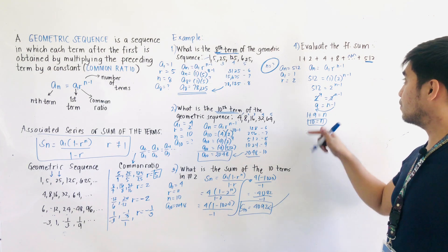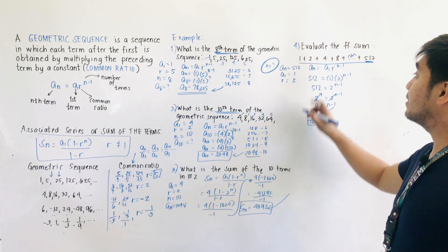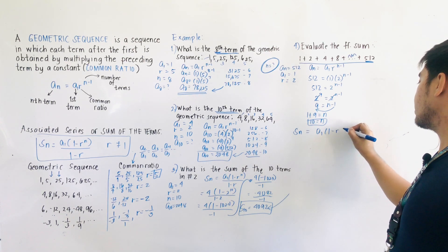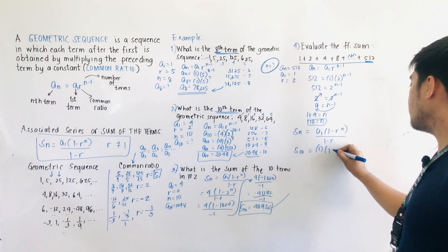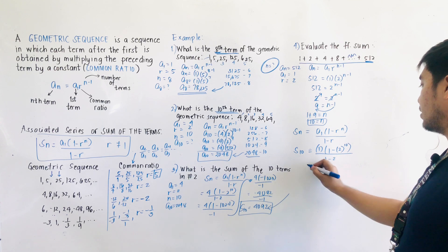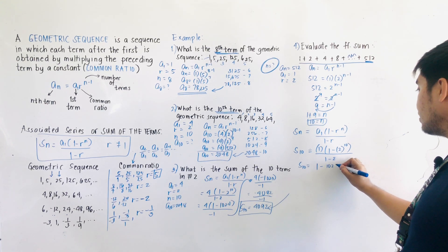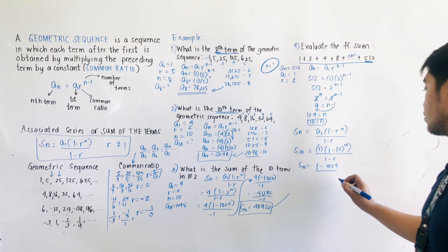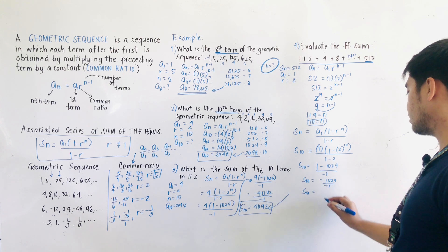Now we get the sum. Using SN equals A1 times 1 minus R raised to N over 1 minus R: S10 equals 1 times 1 minus 2 raised to 10, over 1 minus 2. Since 2 raised to 10 is 1,024, this becomes 1 times 1 minus 1,024 equals negative 1,023, over 1 minus 2 equals negative 1. Therefore, S10 equals negative 1,023 over negative 1 equals 1,023.